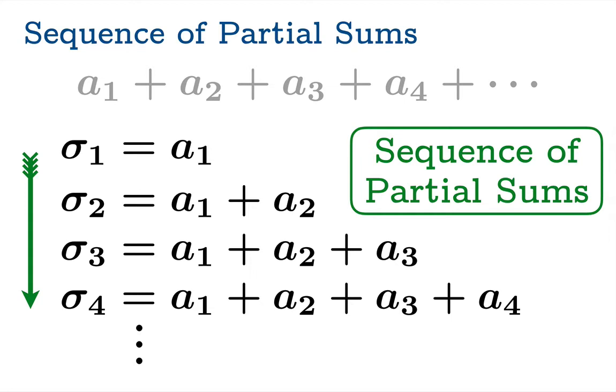The first term in the sequence is simply the first term of your series — we'll call it sigma_1, so sigma_1 equals a_1. Sigma_2 is the sum of the first two terms. Sigma_3 is the sum of the first three terms, and so on — we simply add one more term each time. This new sequence is called the sequence of partial sums associated to the original series, and this is of fundamental importance when you want to understand the behavior of an infinite series.